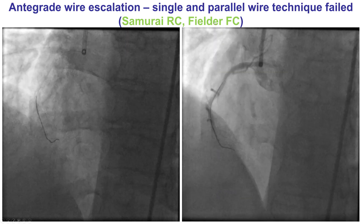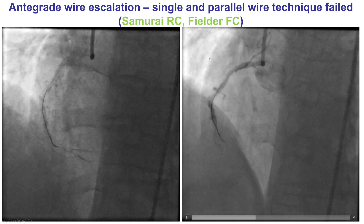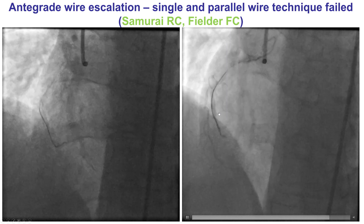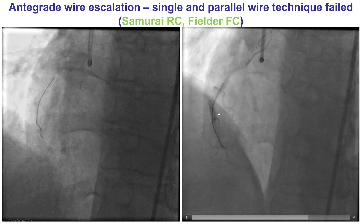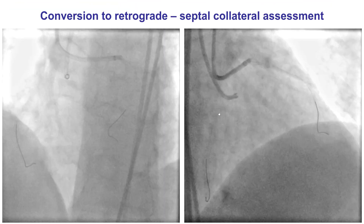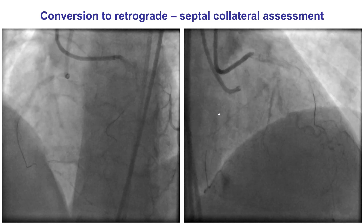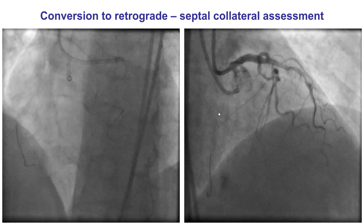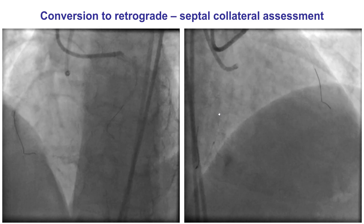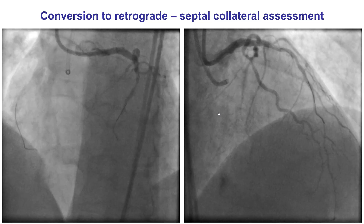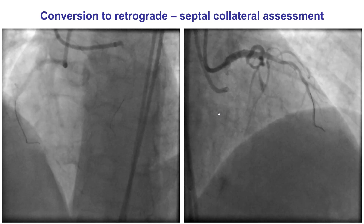We then tried a Fildер FC polymer wire and unfortunately this caused acute closure of the distal right coronary artery. This is one of the examples where polymer wires may be more likely to dissect and cause acute vessel closure. Fortunately, the patient did have a very severe lesion to start with and remained stable without angina and without any hemodynamic compromise despite occlusion of the distal right coronary artery. However, we were still unable to advance an antegrade wire through that area of dissection.